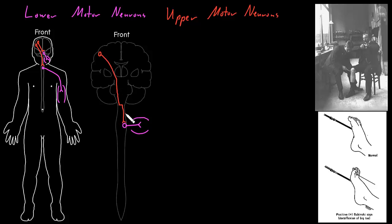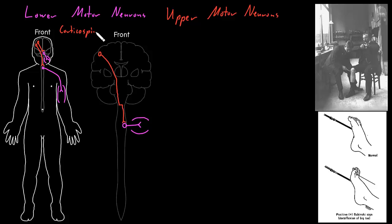This pathway — this collection of upper motor neuron axons traveling from the cerebral cortex to lower motor neurons in the spinal cord — we call the corticospinal tract. 'Cortico' means it starts in the cerebral cortex, and 'spinal' means that it ends in the spinal cord. So it's going from cerebral cortex to spinal cord: the corticospinal tract.